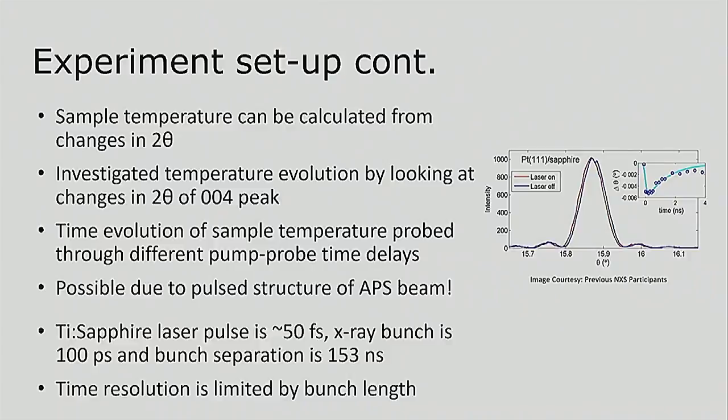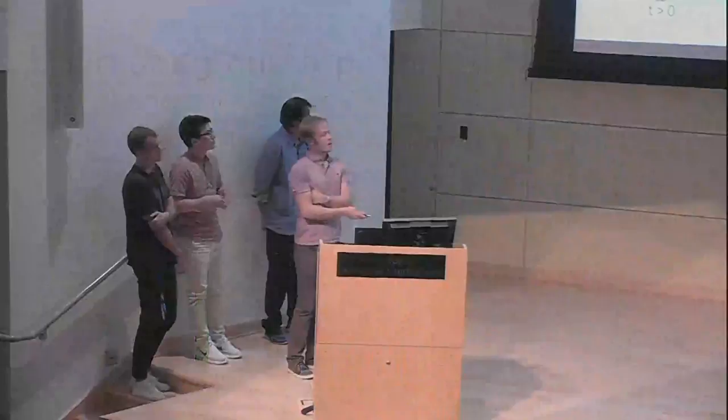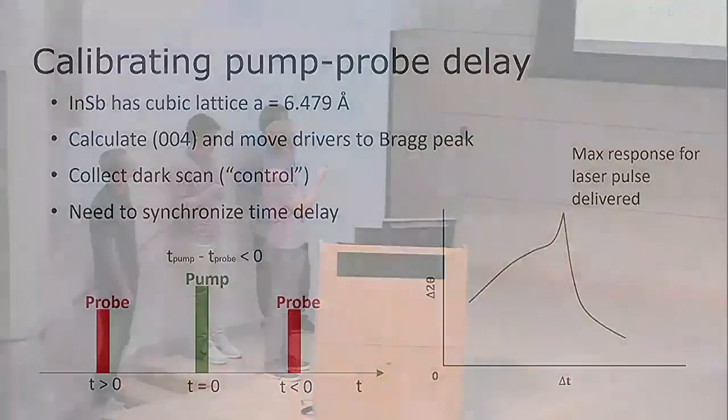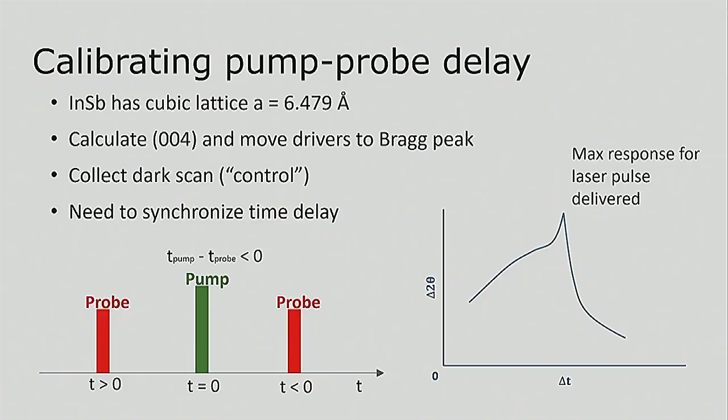So if you want to investigate processes that are faster than this, you can't do this on the APS. Or not in this structure anyway. You need to go to free electron lasers or something. So when we were getting our experiment set up, the next thing that we needed to do prior to collecting our data is figure out where a reflection was that we were going to take a look at. But we knew that the lattice parameter for this cubic structure, indium antimonide, is about 6.5 angstroms. So we can just do a little bit of math and figure out where our 004 reflection is, which we just chose arbitrarily. And then the next thing we need to do is figure out where that peak is absent any additional heating that we impart there. So kind of for our control.